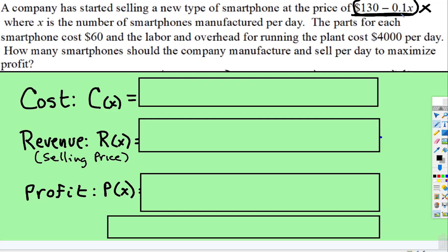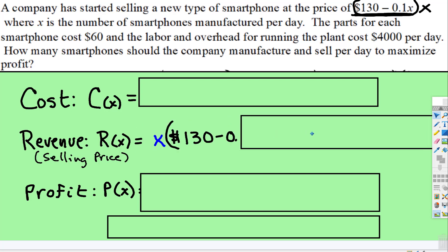So the revenue, this is the selling price, but as soon as you multiply it by the number of phones you sell, that becomes the revenue. So that's the revenue function right there. The individual piece right here, that's just the selling price, but multiply it by the number of phones that you sell, that tells you how much money you're earning, right, per day.